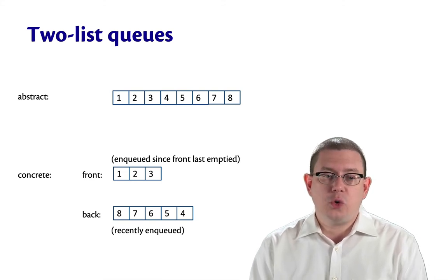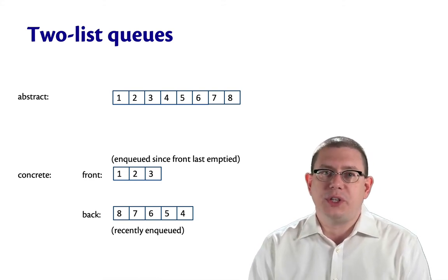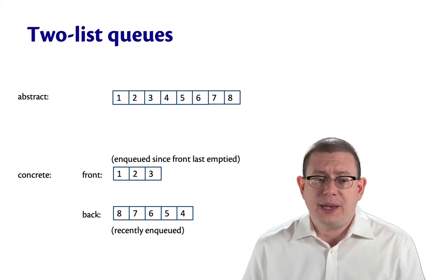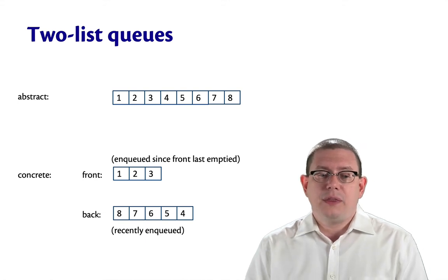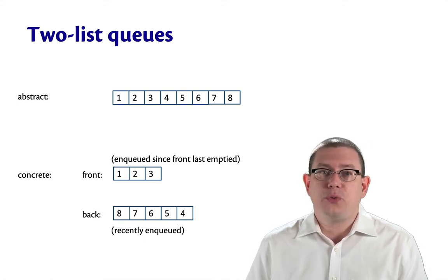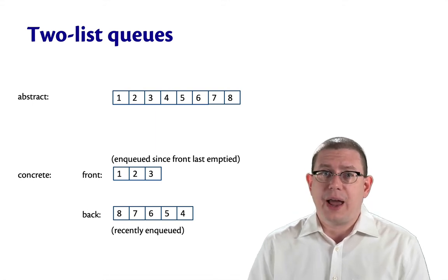So maybe this queue with one through eight in it really was represented by a front queue that had one through three. Those would be the elements that had been enqueued since the front was last emptied. And the back might have eight through four in that order. These would be the recently enqueued elements that are added to the back.